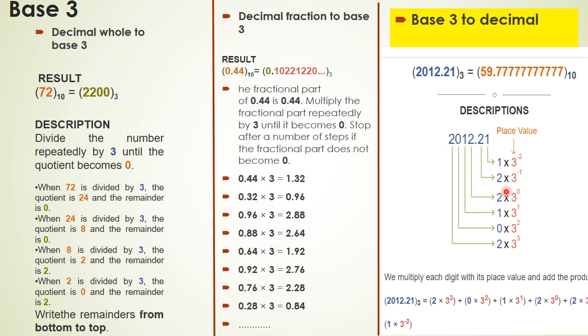So 2 is multiplied by 3 to power 0, 1 multiplied by 3 raised to power 1, 0 multiplied by 3 raised to power 2, 2 multiplied by 3 raised to power 3. Similarly in the fraction part, I will multiply 2 by 3 raised to power minus 1 because its weight is minus 1, and the weight of 1 is minus 2. After this multiplication I will add all these numbers and the result is 59.7777.